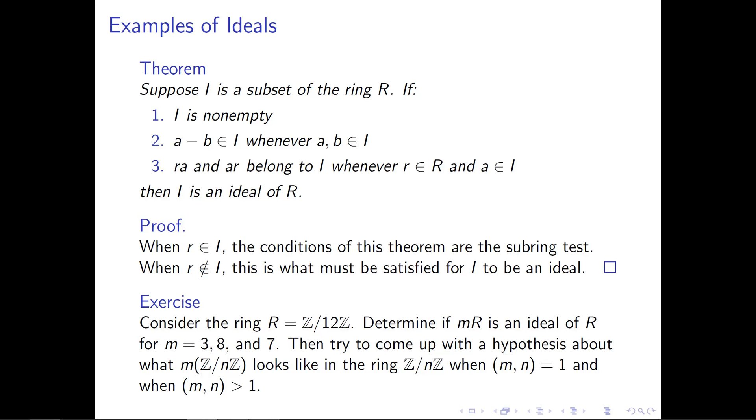try to broaden your understanding and form a hypothesis about what mZ/nZ looks like in the arbitrary ring Z/nZ. You should have two cases: where m and n are coprime, and where m and n share a non-trivial common divisor. The specific examples I've given encompass both cases.